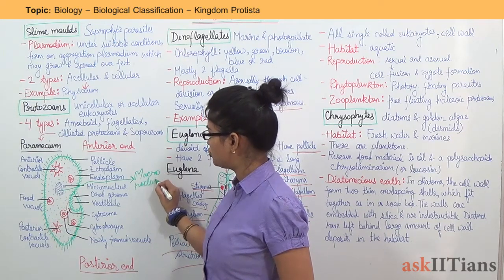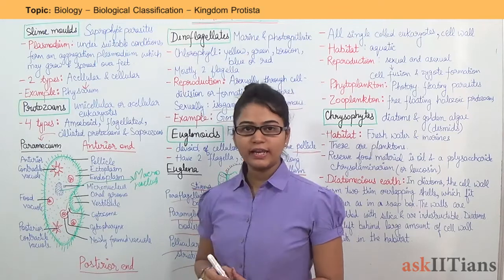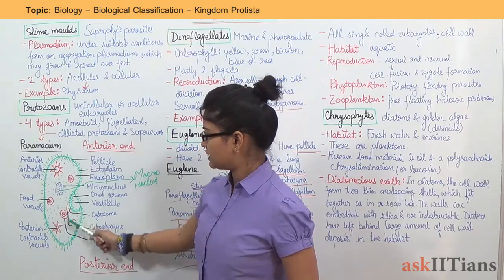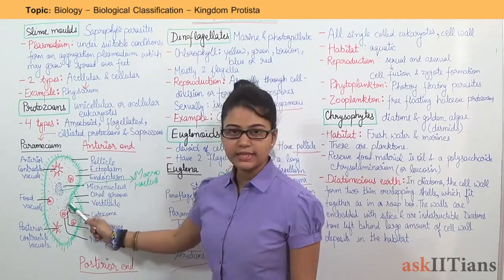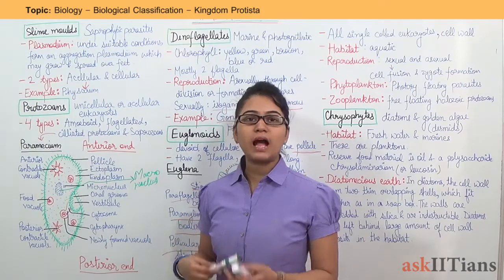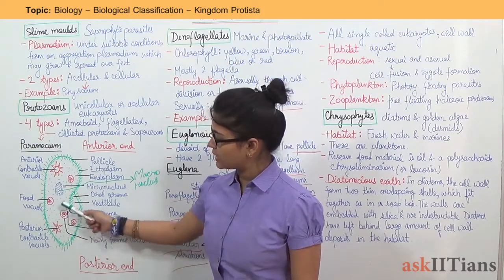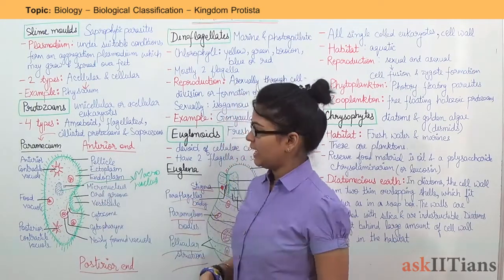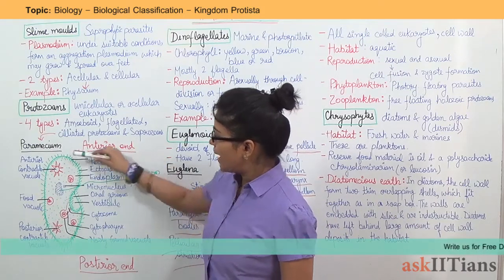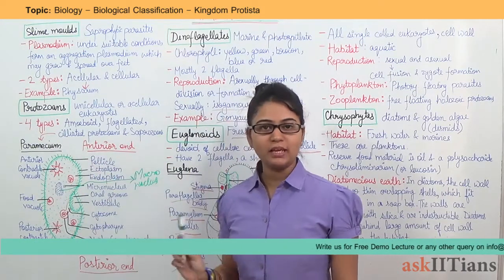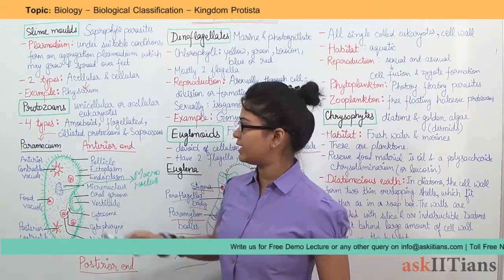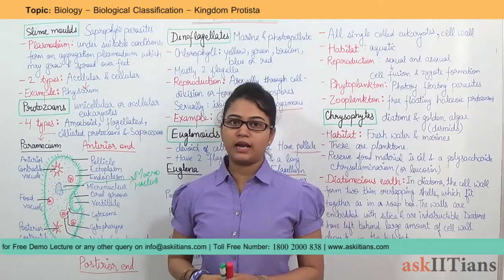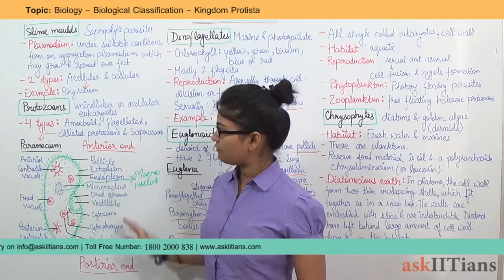Paramecium has two nuclei and no flagellum. There is a structure called the cytostome or cytopharynx, at which point new food vacuoles are formed and then distributed in the endoplasm. Paramecium also has a pellicle. A cell wall is not present in paramecium. This concludes the diagram of paramecium, under which we have seen all its parts.